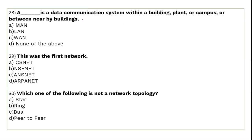A data communication system within a building, plant, campus, or between nearby buildings is called a Local Area Network (LAN). The first network ever developed was ARPANET — Advanced Research Projects Agency Network.